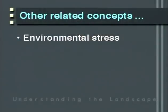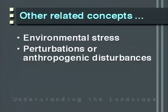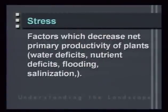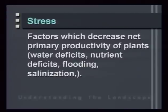Two other important related concepts are environmental stress and perturbations, or anthropogenic disturbances. Stress is not like disturbance. Disturbance is any discrete event in time that alters the ecosystem. A stress consists of factors that decrease net primary productivity of plants or animals, influencing productivity, growth rate, or fecundity. These include water deficits, forage deficits, nutrient deficits, flooding, and salinization — things that may not kill plants or change substrate availability but do cause stress on individuals.